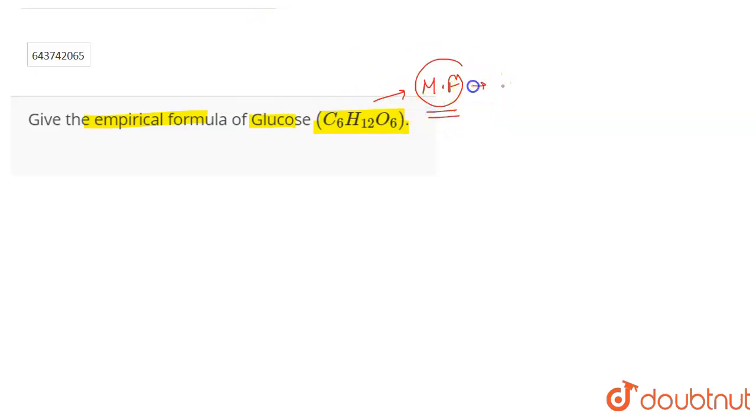The molecular formula of the compound is the actual whole number ratio. The actual ratio of the elements which are present in a compound, which means that it consists of 6 carbon atoms, 12 hydrogen atoms and 6 oxygen atoms. So this is the exact formula, the molecular formula that tells us that this particular number of elements are present in this compound.